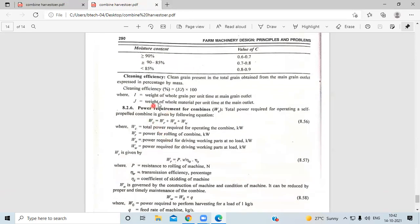Next, the cleaning efficiency equals percentage I upon J times 100, where I is the weight of the whole grain and J is the weight of the whole material.